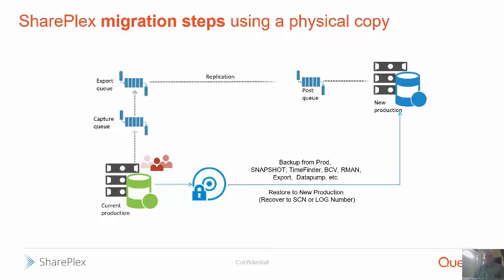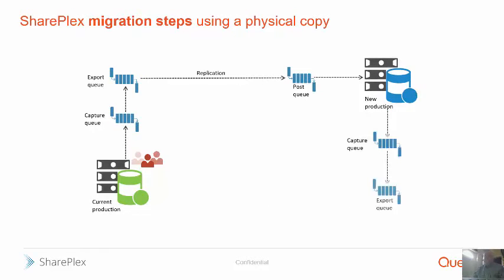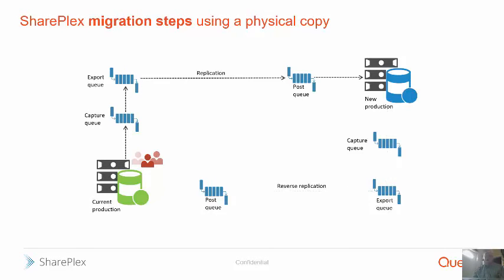Next, in order to eliminate the risk of migration and having to fall back for whatever reason, you're going to start replication from the source — your new production — back to the old source, or old production, which is now a target. You're not going to post the data; you're just going to hold it in the post queue. There's really going to be no data there yet because there are no users. At this point, you can also test your new production environment, make sure everything's working right, move some users over there, and test it. You may want to repeat this process two or three times to get your timings right.